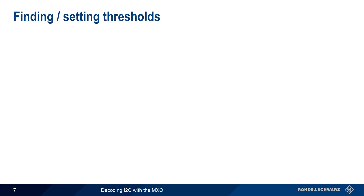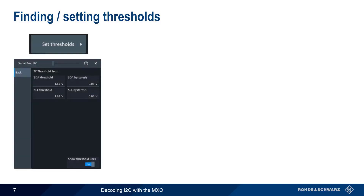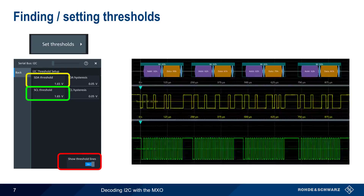Now that we've verified that our input channel levels and time base are configured properly, the next step is setting thresholds. These can be thought of as the voltage values that divide a logical 0 from a logical 1. Here, the thresholds for SDA and SCL are both set to 1.65 volts. If we enable 'show threshold lines,' we can see that, for this example, these are appropriate thresholds, since the configured voltage values fall almost directly between the high and low states of our clock and data signals.